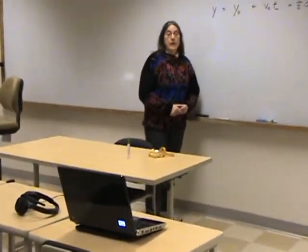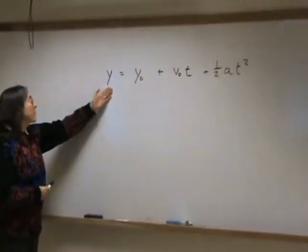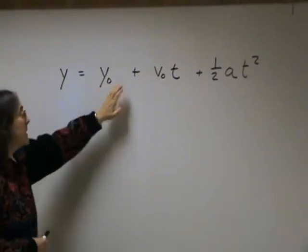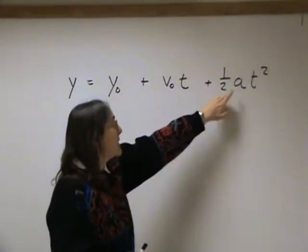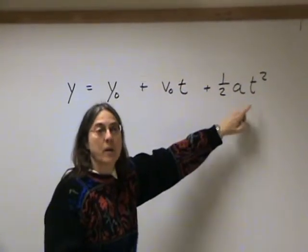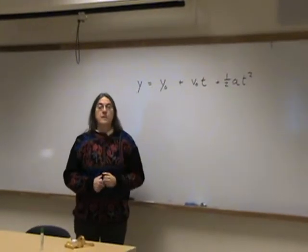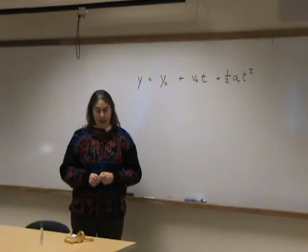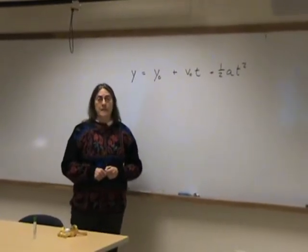An object moving at constant acceleration will obey this relationship, where the position at any time will be equal to the initial position plus the initial velocity times the time plus one-half the acceleration times the time that it's been moving squared. We're going to do a simple experiment that will determine two things. First of all, is the acceleration due to gravity a constant? And secondly, what is the value of that acceleration?